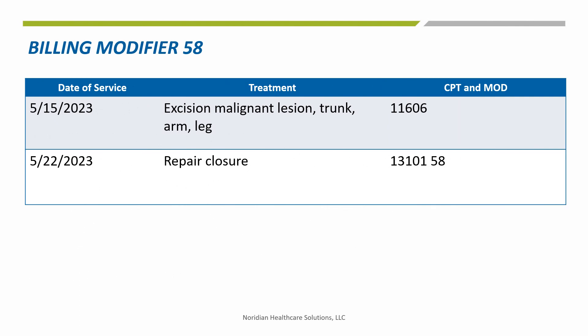Here is an example of when you would use modifier 58. The surgeon removed a malignant lesion including the margins from the trunk, arm, or leg. He made a full-thickness incision through the skin, usually in an elliptical shape around and under the lesion. The lesion and rim of normal tissue are removed, and the skin incision is sutured. Since this had an excised diameter greater than 4 cm, code 11606 was used, and a complex or layered closure is reported separately. A reconstructive procedure was necessary using local flaps, so code 13101 for 2.6 cm to 7.5 cm was also used. This is a staged procedure and modifier 58 is used on the repair closure a few days later.